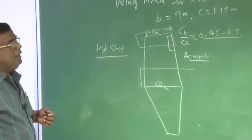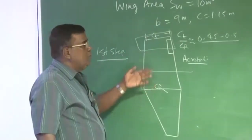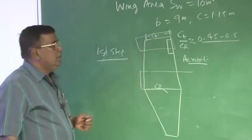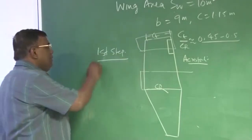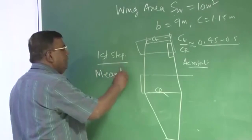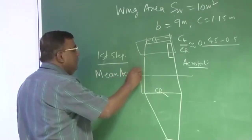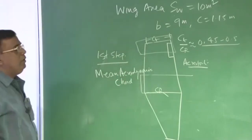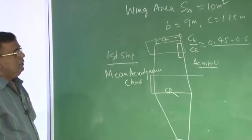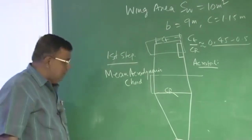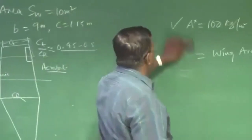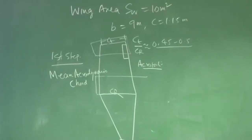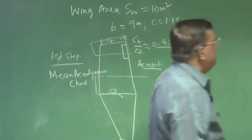We are talking about chord and span. The moment I put a taper ratio, the question comes: which chord will I take? Because chord is varying across the span. So we have to come to the concept of mean aerodynamic chord, which we have already explained in earlier courses — but we will be revising and doing a calculation. This is one aspect. Second: you will also appreciate that the wing is a subsystem of an airplane — a very important subsystem.